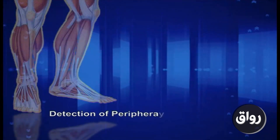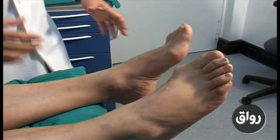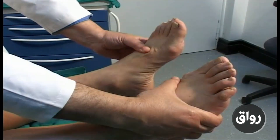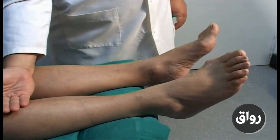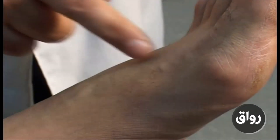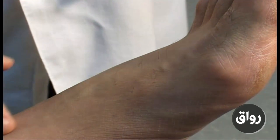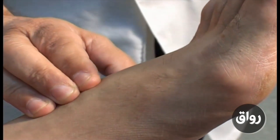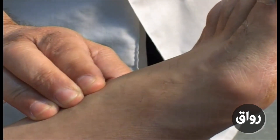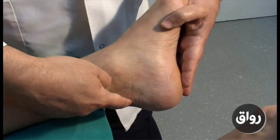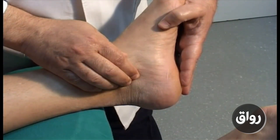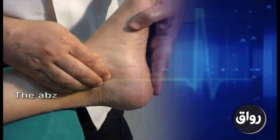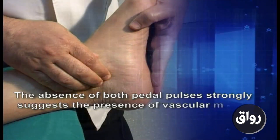Detection of peripheral arterial disease: inspect the foot for color changes and feel the foot for temperature difference. Palpate the dorsalis pedis artery just lateral to the tendon of flexor hallucis longus, and palpate the posterior tibial artery midway between the medial malleolus and the Achilles tendon with the foot passively dorsiflexed.